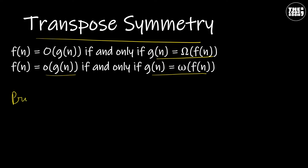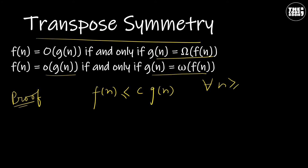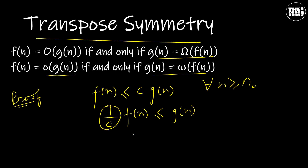Let us prove this property. According to the definition of Big O notation, we have a function f(n) such that f(n) is less than or equal to c·g(n) for all values of n greater than or equal to n₀. We can also write it as (1/c)·f(n) ≤ g(n). As 1/c is also a constant, this is a representation of Big Omega notation. Therefore, g(n) is the Big Omega of f(n).